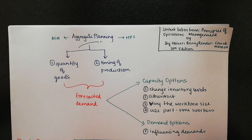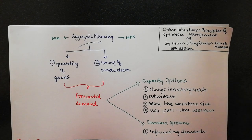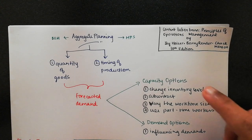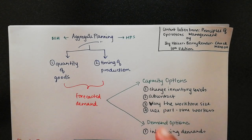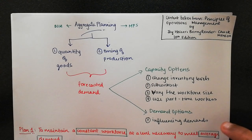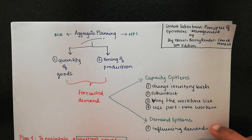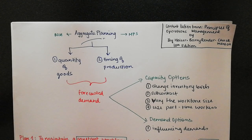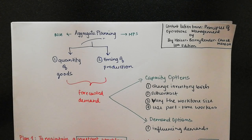With capacity options, you have no influence over the demand. That's a separate option called demand options, where you can influence the demand. Capacity options has no control over the change in demand, only certain variables such as inventory and workers. Demand options means you would be influencing demand. For example, consider airlines — they have holiday seasons where they can influence demand through prices. If they lower the price, they have an influx of higher demand, and that can be controlled through demand options.